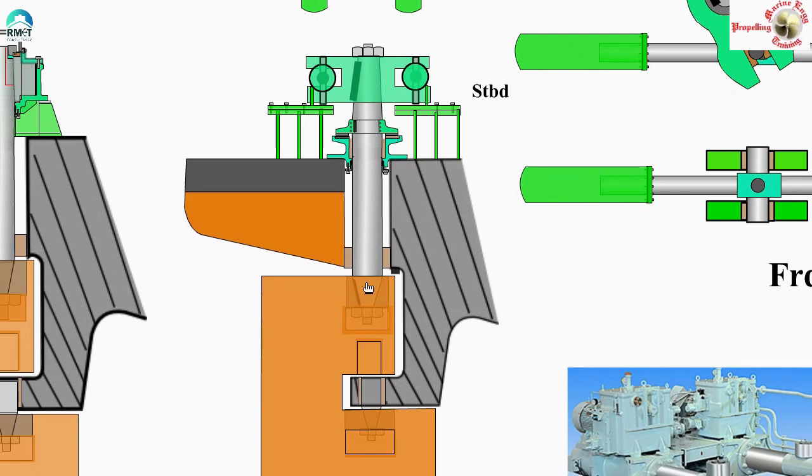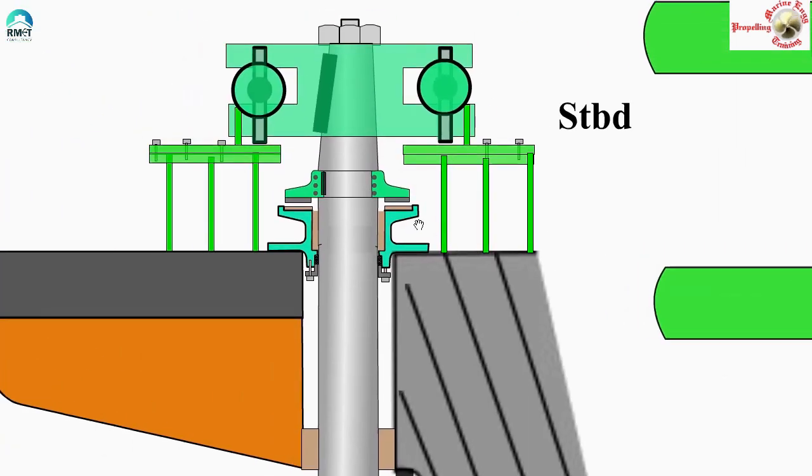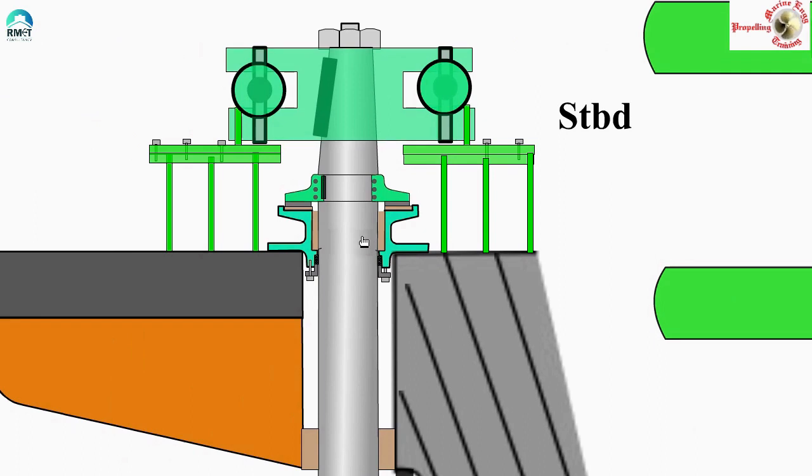Let us see where is the weight of the Rudder stock and the Rudder coming on. You see the Rudder connected to the stock. The entire thing you see is now actually sitting on this piece of bearing metal. See here, the Rudder is sitting on this. Now, we call this as the Rudder carrier bearing. This is the Rudder carrier bearing. It is carrying the weight, so we call it the carrier bearing.